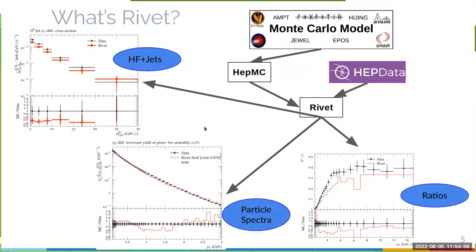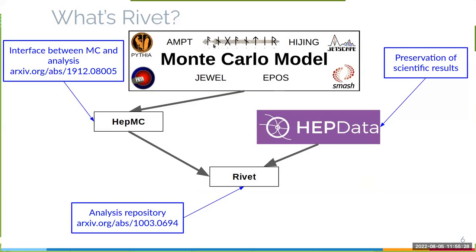Rivet at this moment will give you tools to reproduce results with heavy flavor jets and particle spectra. It can create ratios — not only particle ratios, but also R_AA, R_CP, and any kind of ratio you need — and there will be tools to facilitate that.